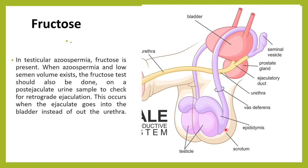In testicular azoospermia, due to conditions like testicular tumor, testicular defect, infection, or radiotherapy/chemotherapy on the testis, the testis is not able to produce sperms. In that case, fructose will still be present because the seminal vesicle is normally producing fructose. When azoospermia is present and the volume of semen is also very low, you should suspect obstruction and must perform a fructose test.